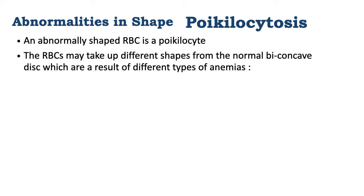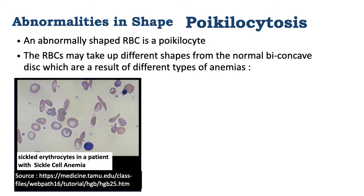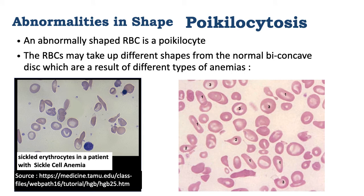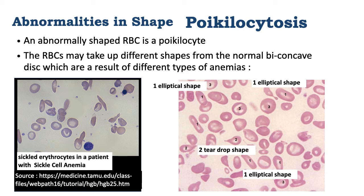The first abnormality we are going to look at is the abnormality in shape, also called poikilocytosis. An abnormally shaped red blood cell is a poikilocyte. Red blood cells may take up different shapes that differ from the normal biconcave disc, and it is a result of different types of anemia. The most common is sickle cell anemia, where the red blood cells take on a sickle shape. In this slide picture, there are many different kinds of shapes — those labeled one are elliptical in shape, and those labeled two are teardrop in shape.